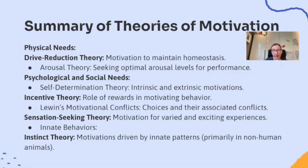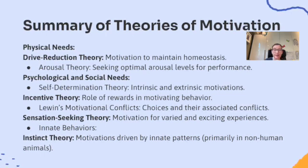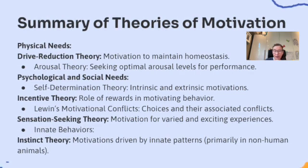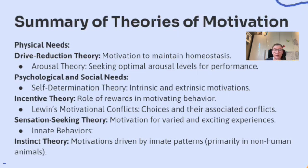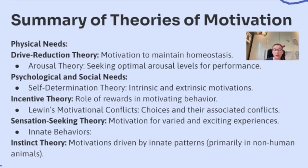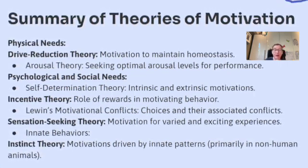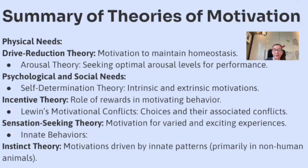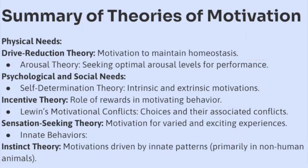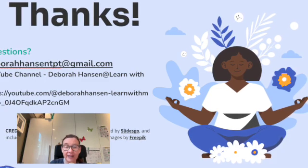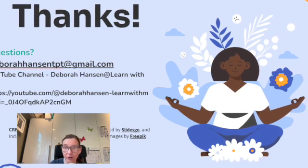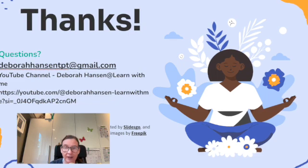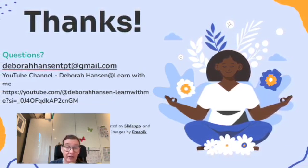To summarize all the theories: drive reduction theory is motivation to maintain homeostasis; arousal theory is seeking optimal arousal levels for performance; self-determination theory covers intrinsic and extrinsic motivations; incentive theory is the role of rewards in motivating behavior; Lewin's motivational conflicts covers choices and their associated conflicts; sensation seeking theory is motivation for varied and exciting experiences; and instinct theory covers motivations driven by innate patterns, primarily in animals. That's all the essential knowledge for the first CED question of 4.6 Motivation.